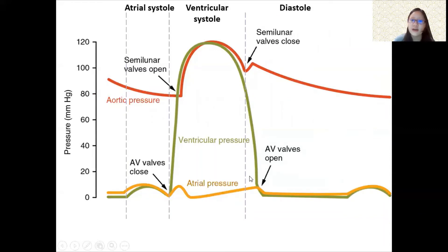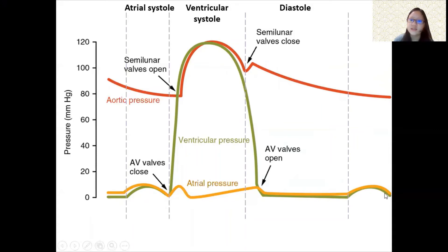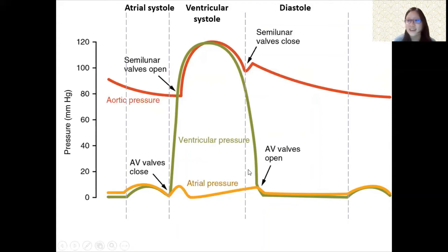Once the semilunar valves close, shortly after, the AV valves open so that the atria and ventricles are filled with blood. The next line marks the start of the next cardiac cycle — atrial systole all over again. Remember, it's a cycle: atrial systole, ventricular systole, diastole, then back to atrial systole, and so on. Each cardiac cycle is 0.8 seconds — atrial systole is 0.1 seconds, ventricular systole is 0.3 seconds, and diastole is 0.4 seconds, the longest stage of the three.